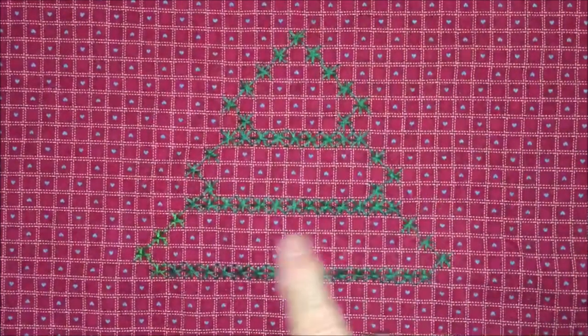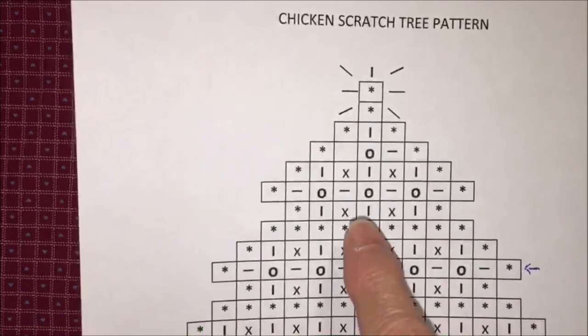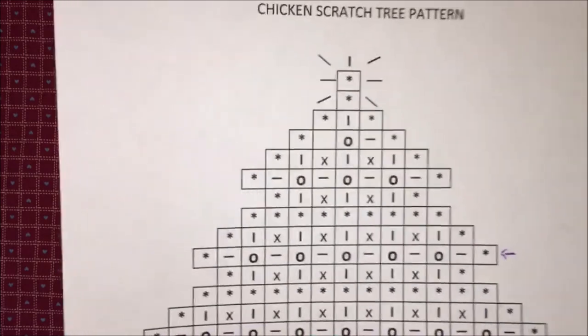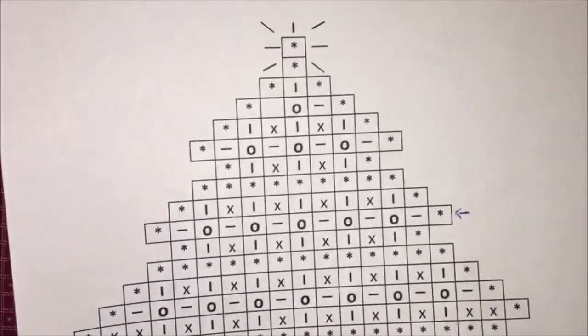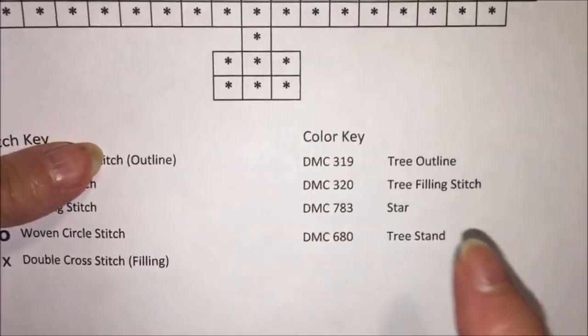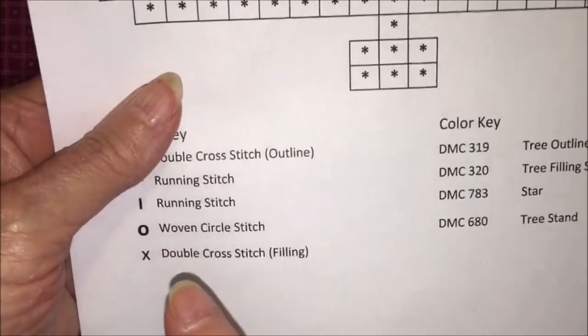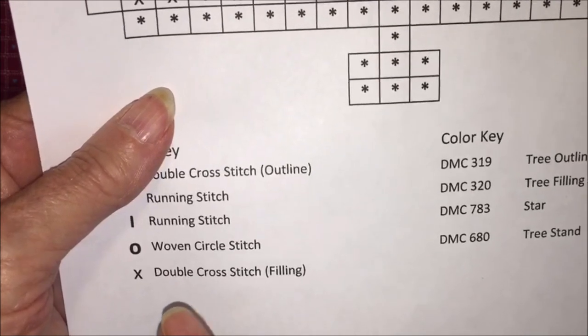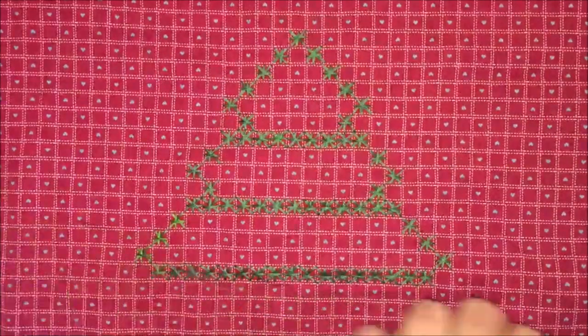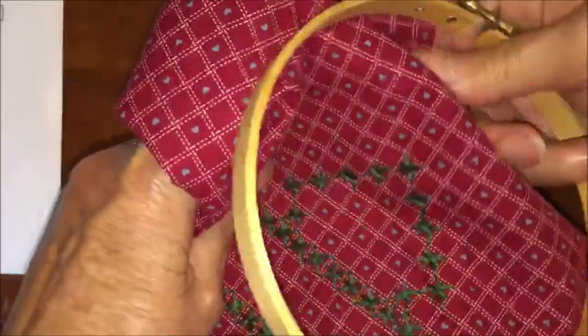I've finished outlining the Christmas tree and now what I would suggest that you do next, according to the pattern, is where the little X's are and for this I used DMC floss 320 and the X's are also the same stitch that you did before. It would be the double cross stitch and you're starting to fill in the Christmas tree. So let's begin and I'll just show you how to get started on this one.